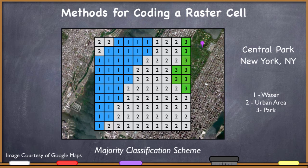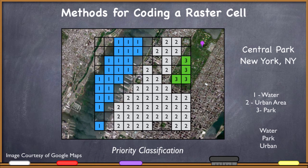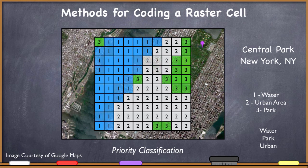Let's look at classifying by rank. This time we establish a priority: water is the highest priority, park is second, and urban areas is the lowest priority. So water overrides everything, and park overrides urban. If I classify using this scheme, I get a raster data set that looks like this — again, something a little bit different from the previous two.